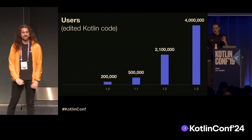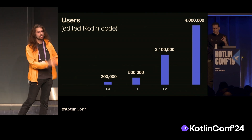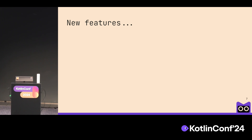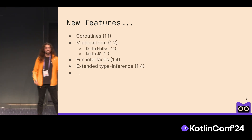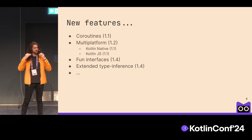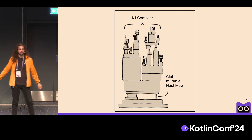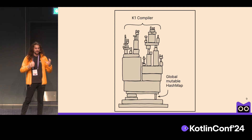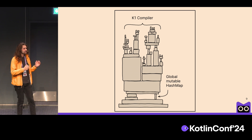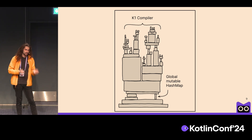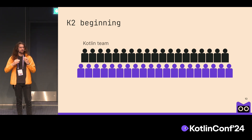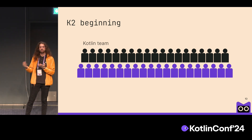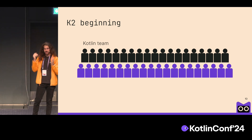Since then, Kotlin became popular. A lot of Kotlin code is being written nowadays. Some exciting new features were added — not only exciting and nice, but also complex, with multi-platform being one of the most complex features in our language. We kept evolving Kotlin, yet the architecture stayed the same for quite a long time. And the Kotlin team actually grew — by the time we started working on K2, the team had already doubled in size and continued to grow further.